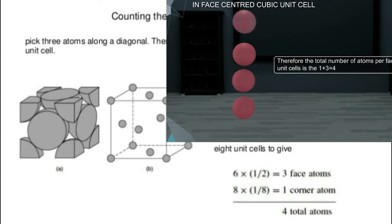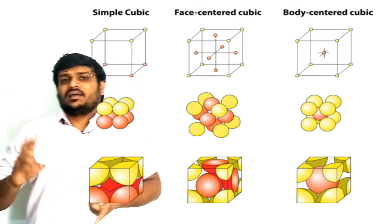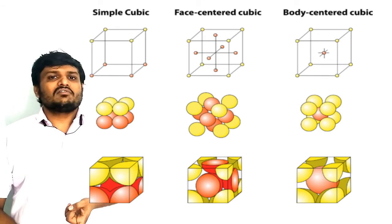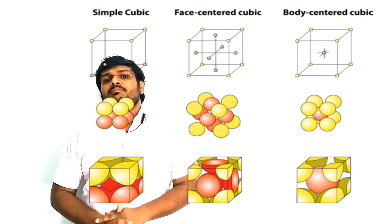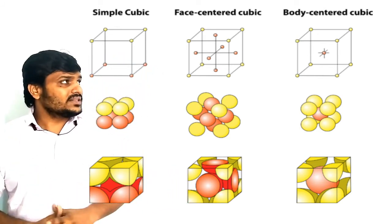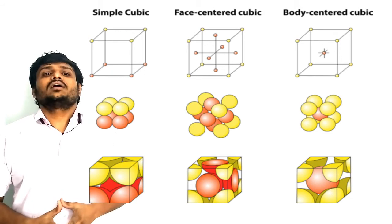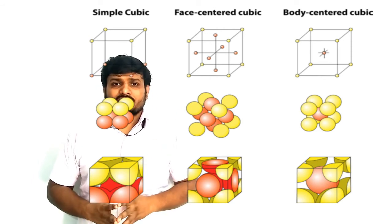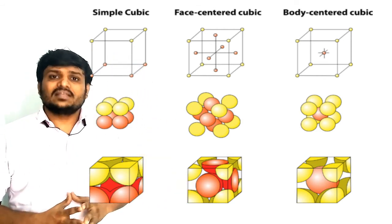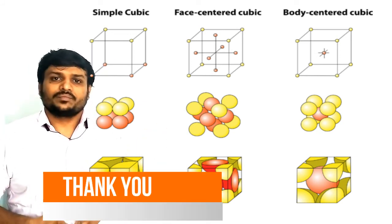To summarize: in a primitive cell we get one atom per unit cell, in a BCC body-centered unit cell we get two atoms per unit cell, and in FCC we get four atoms per unit cell. This number of atoms is important for finding the density of solids and for drawing the lattice pattern. In the next lecture we will use this number of atoms, so please revise this lecture and prepare your notes. Thank you.